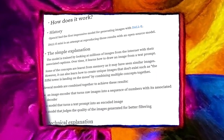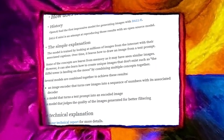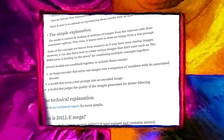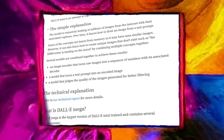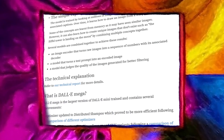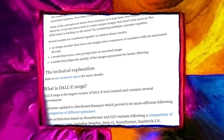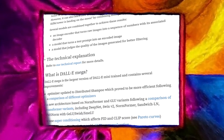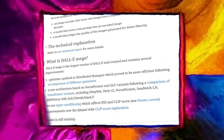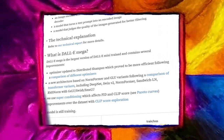Several models are combined to achieve these results: an image encoder that turns raw images into a sequence of numbers with its associated decoder, a model that turns a text prompt into an encoded image, and a model that judges the quality of the images generated for better filtering. While this is a simple enough explanation, I personally believe there is a very nice and cool Android who is drawing these on the fly.